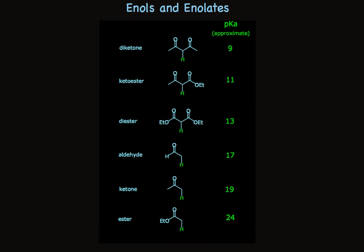Summarizing the acidities, then, of the alpha-hydrogen of carbonyl compounds, the diketones are most acidic, pKa's roughly 9, all the way through to esters that have pKa's of 24.